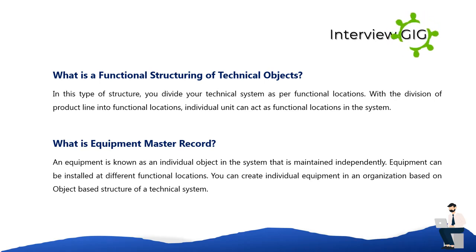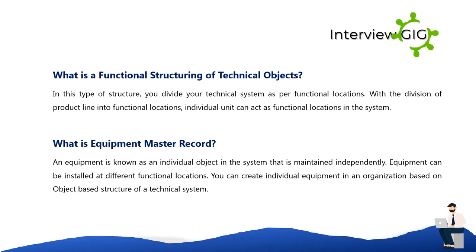An equipment master record refers to an individual object in the system that is maintained independently. Equipment can be installed at different functional locations. You can create individual equipment in an organization based on the object-based structure of a technical system.